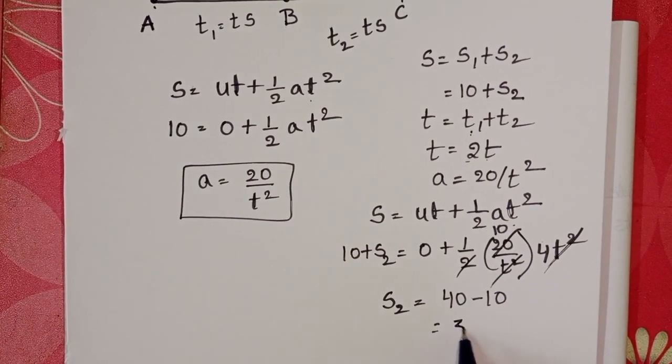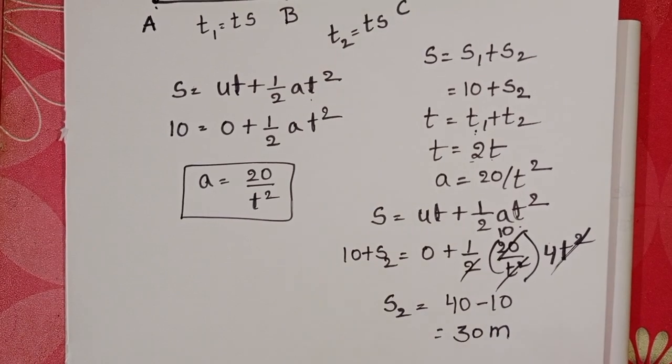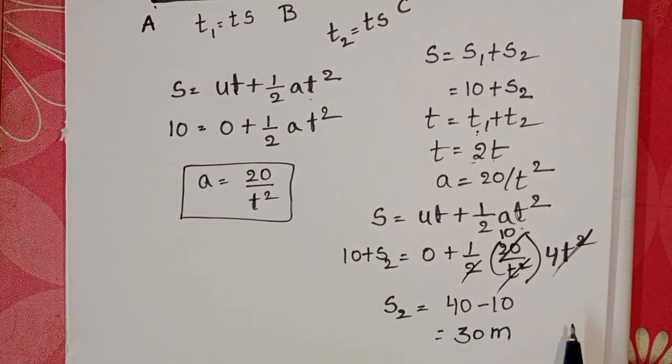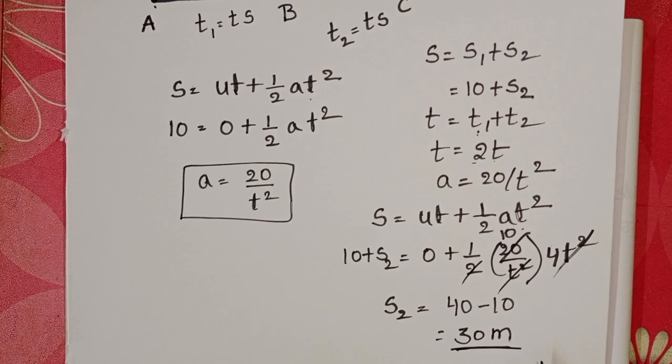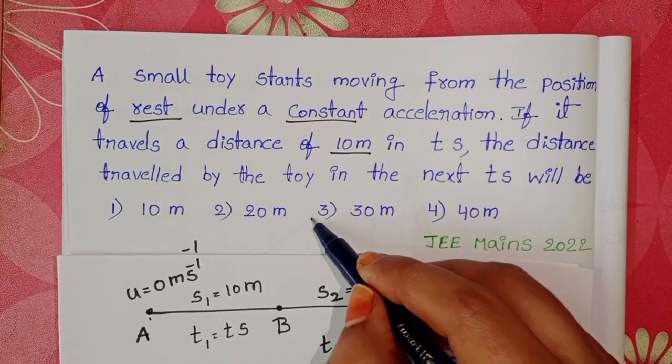40 minus 10 equals 30 meters. So in the next t-seconds, the distance travelled by the toy is 30 meters. Third option is correct.